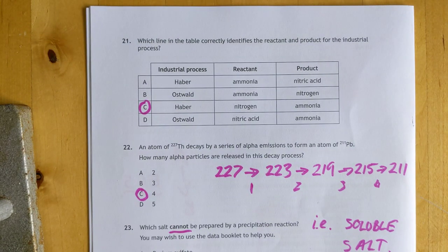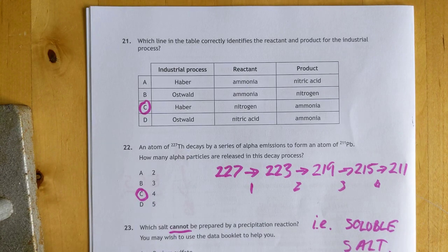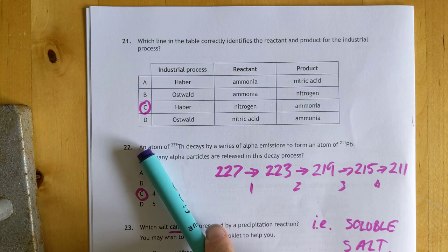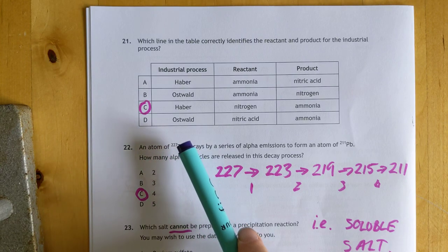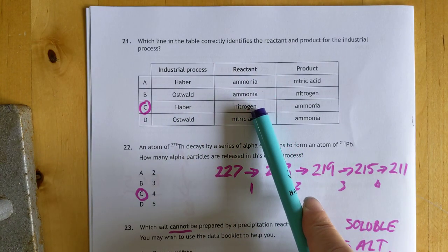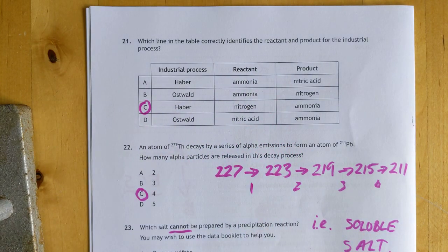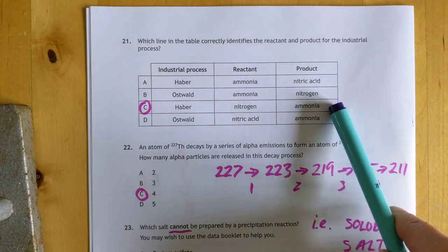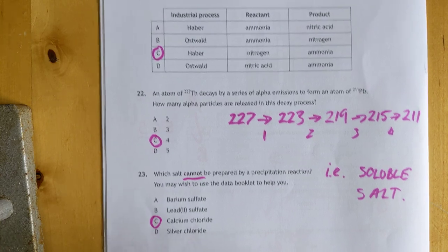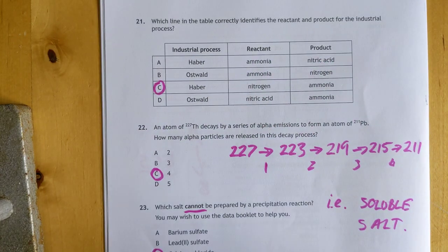Which line in the table correctly identifies the reactants and products for the industrial process? You have to know your stuff here. Haber: a reactant is something that goes in, so nitrogen gas goes into the Haber process and ammonia comes out. That's the product. It's basically just C. A mishmash of a question to read that one, especially if you have any difficulty in terms of reading.